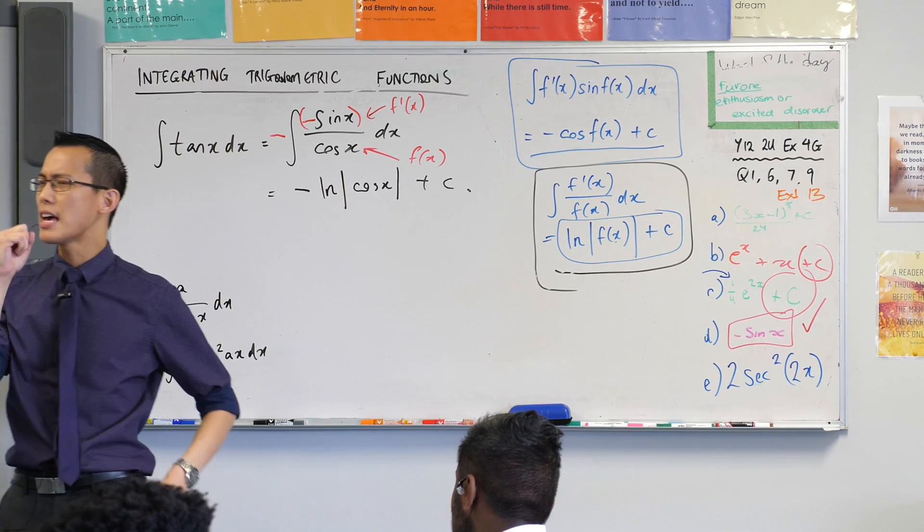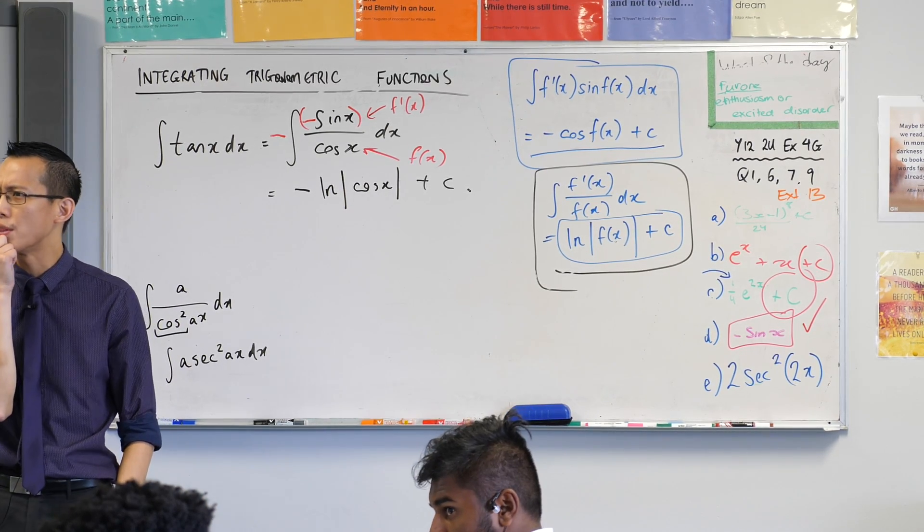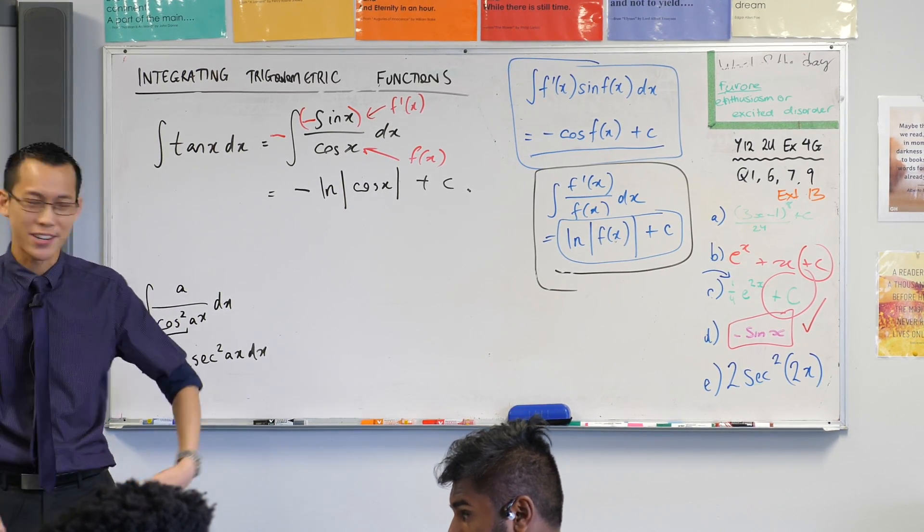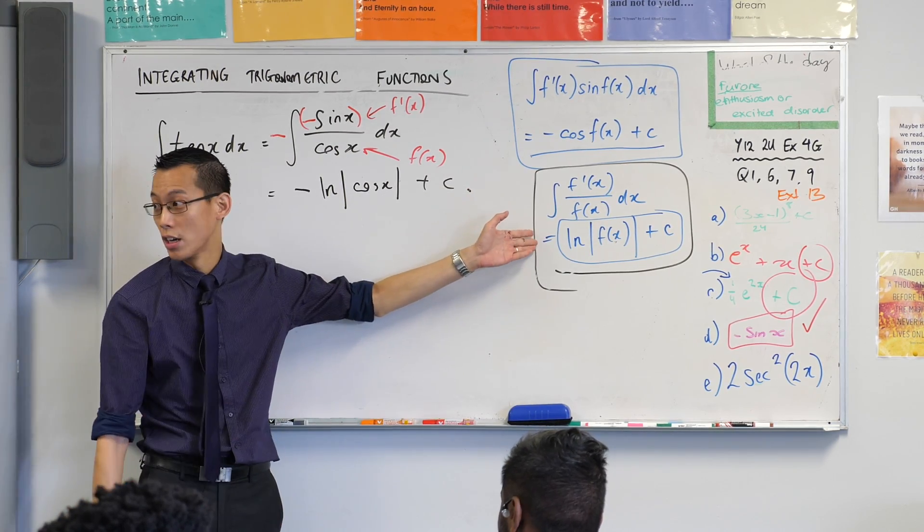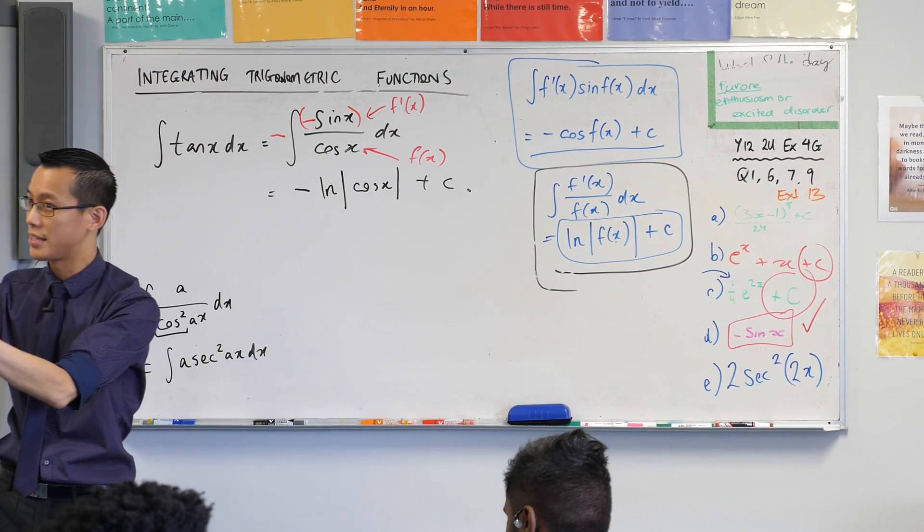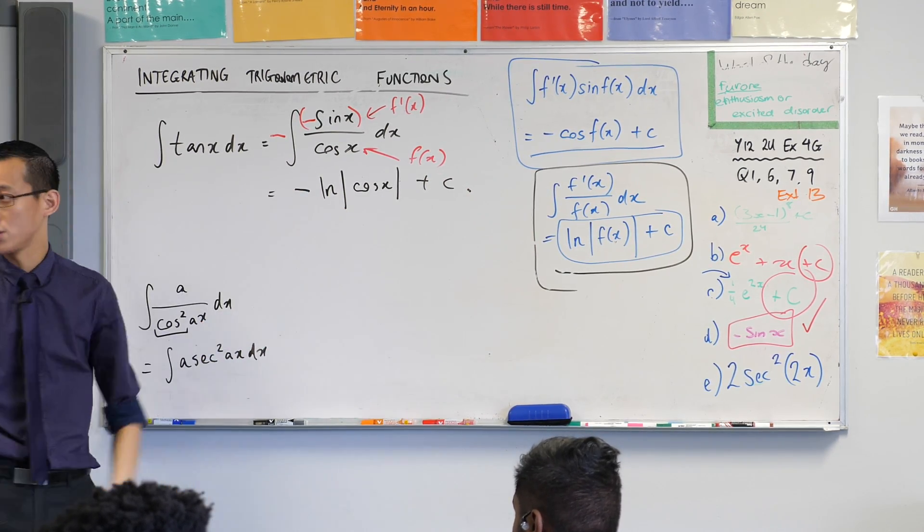By the way, actually, is that on the reference sheet? I don't know that it is. That one's not. It's not because it's the combination of this and all of your knowledge of trigonometry. So, being that you can combine those together to get this, they don't give it to you straight away, okay?